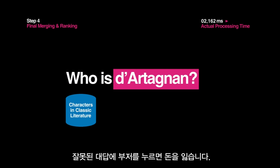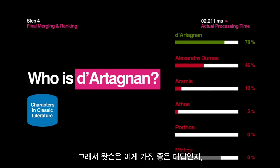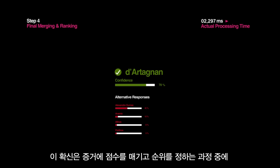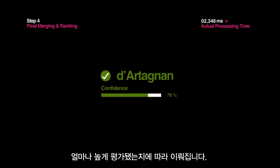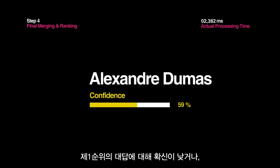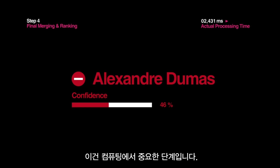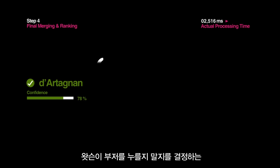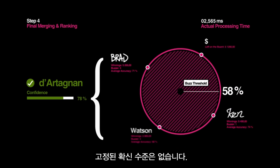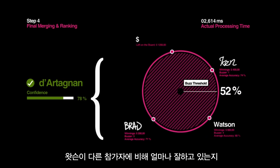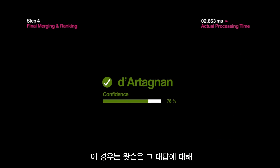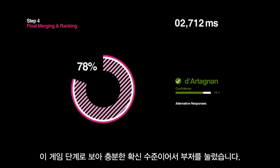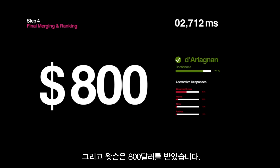In Jeopardy!, contestants lose money if they buzz in with the wrong answer, so Watson estimates its confidence as to whether its top answer — along with every other answer possibility — is correct. This confidence is based on how high the answer is rated during evidence scoring and ranking. If Watson's confidence for its top answer is low, under 50% for example, then Watson won't answer. Watson knows what it knows, and it knows what it doesn't know. There is no fixed confidence level deciding whether Watson buzzes in; the threshold is constantly changing based on how well Watson is doing relative to the other players and how much money is left on the board. In this case, Watson arrived at its answer with a 78% confidence — high enough to buzz in — and it won Watson $800 in the process.